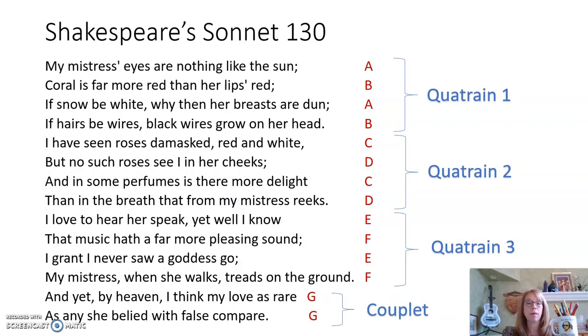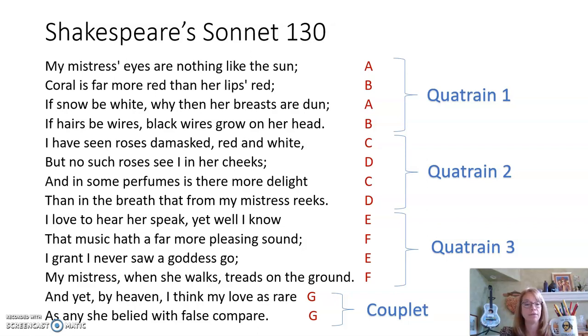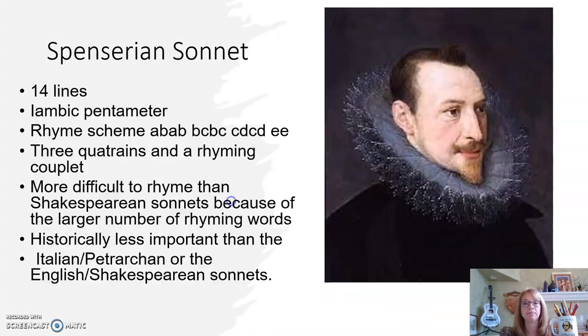This is that same poem I just read aloud, Shakespeare's Sonnet 130 — I'm not going to read it again, but here you can see the famous Shakespearean rhyme scheme marked: A-B-A-B-C-D-C-D-E-F-E-F-G-G.